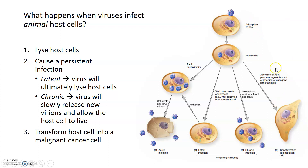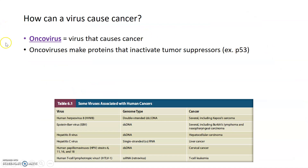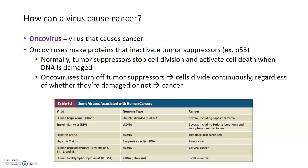Some viruses can activate certain proteins and transform a normal cell into a cancer cell. Viruses that cause cancer are known as oncoviruses. Oncoviruses typically act by producing proteins that inactivate tumor suppressors in the cell. Normally, tumor suppressors put the brakes on cell division and activate cell death when DNA is damaged. If the DNA in a cell is damaged, a tumor suppressor prevents replication and division, or kills the cell through apoptosis. Oncoviruses essentially take the foot off those brakes, allowing cells to continuously divide regardless of DNA damage, leading to cancer.